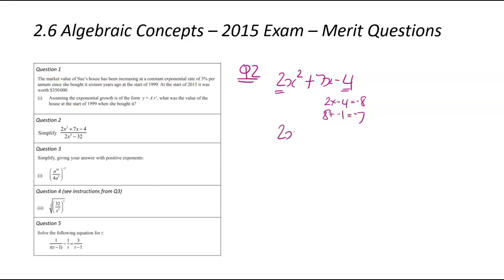We're now going to split the 7x into 8x and minus x. So that's going to become 2x squared plus 8x minus 1x minus 4. We now factorize the first part and the second part. So this here is going to be 2x times x plus 4. Second part, they both got a minus 1 in common, x plus 4.